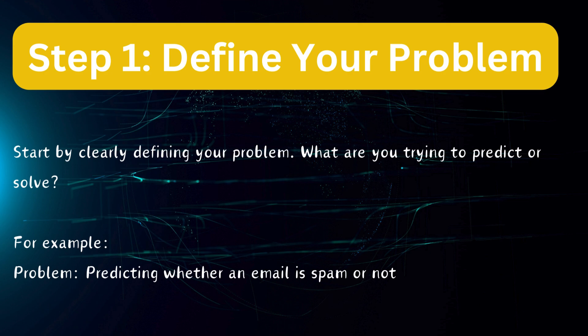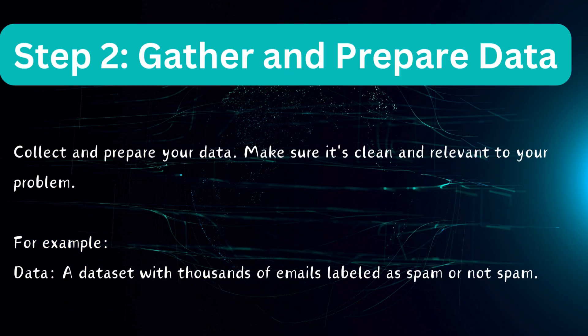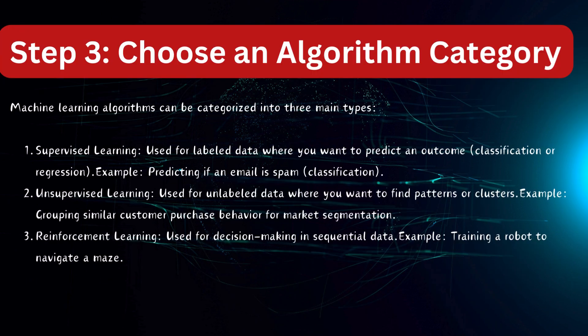Step two: gather and prepare data. Collect and prepare your data, make sure it's clean and relevant to your problem. For example, a data set with thousands of emails labeled as spam or not spam. Step three: choose an algorithm category. Machine learning algorithms can be categorized into three main types: supervised, unsupervised, or reinforcement learning.